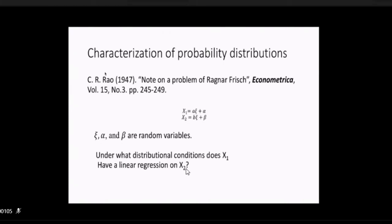And the problem posed was simply like this. Suppose there is one regression, X1 regressed on a variable ξ with an equation and error α, and there is another regression, X2 regressed on ξ with a regression error β. Where ξ, α, and β are random variables. Under what distributional conditions of ξ, α, and β does X1 have a linear regression on X2?